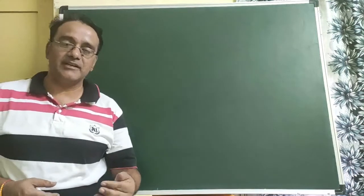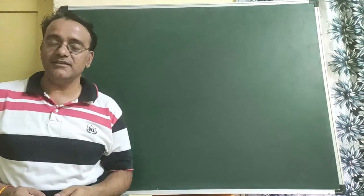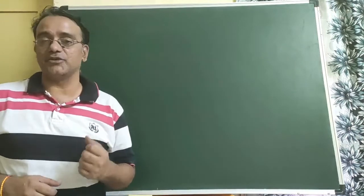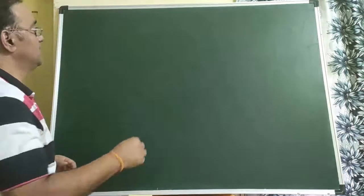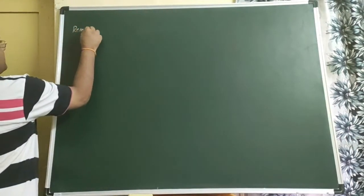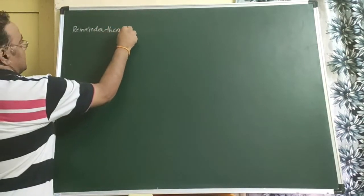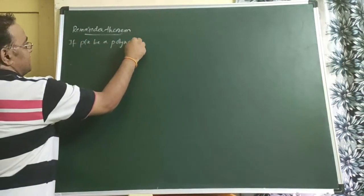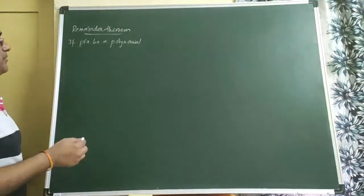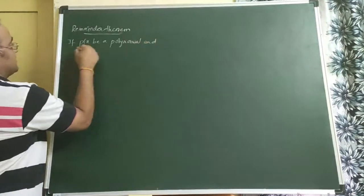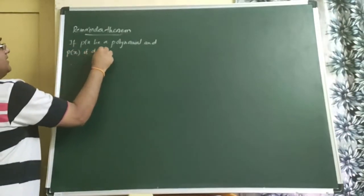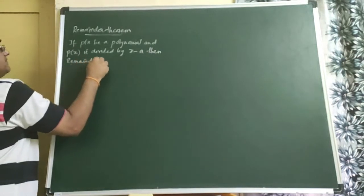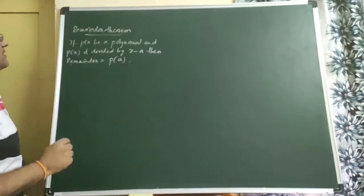Welcome to the fourth session of Chapter 2, Polynomials, Class 9th. Today we are going to start a new topic: Factorization of Polynomials. We will start with the Factor Theorem. Before that, let us revise the Remainder Theorem first. Remainder Theorem: if P(x) is a polynomial and P(x) is divided by (x − a), then the remainder is equal to P(a).